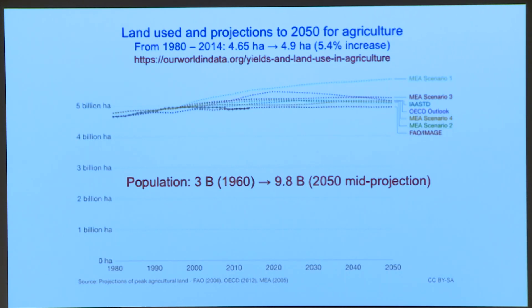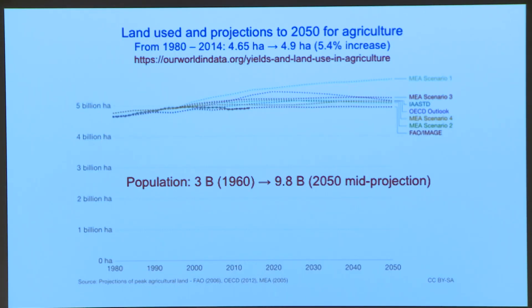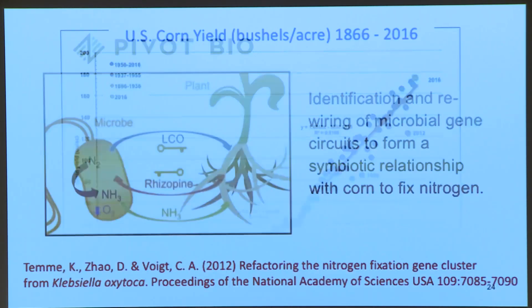We're now at seven and a half billion people, going to nine and a half billion by 2050, and maybe peaking at ten to twelve billion. The projection of land use from 1980 to present and from present to 2050 is nearly flat, even though we're going to grow another roughly two billion people who are going to be eating more because they will be wealthier. Even considering all those projections, agriculture is also raising ahead — corn in the United States per acre has gone shooting up to 140-160 bushels per acre.